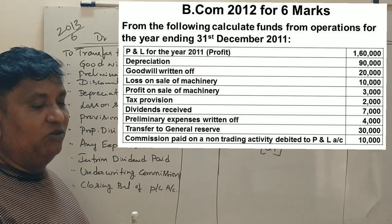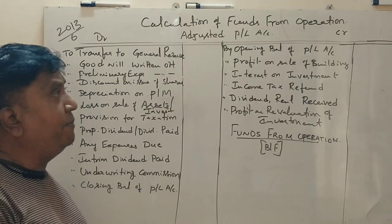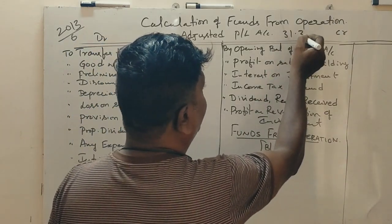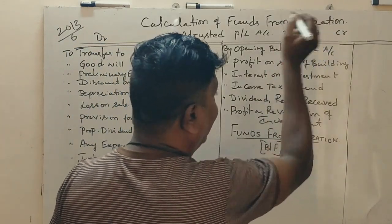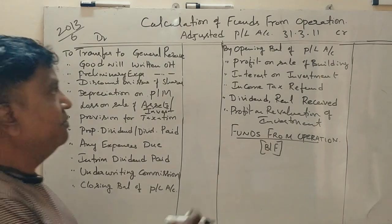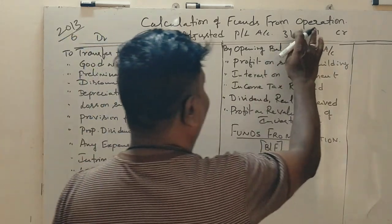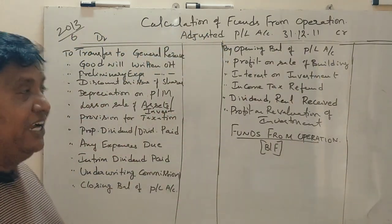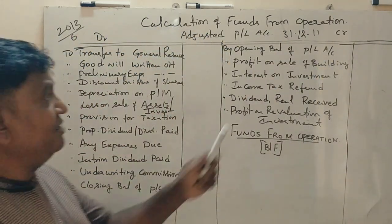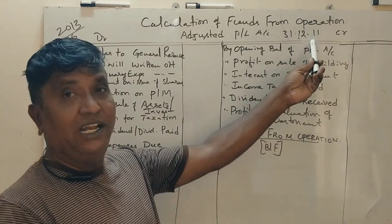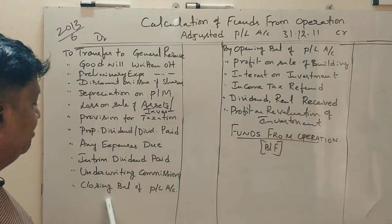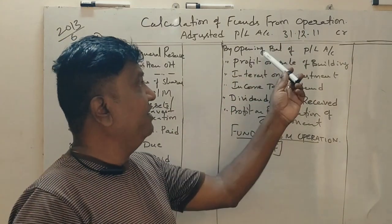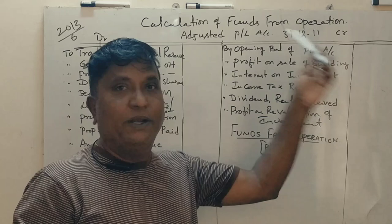Funds from operation, year ending December 2011. That is December 2011 — closing balance. So that is January 2011 — opening balance.